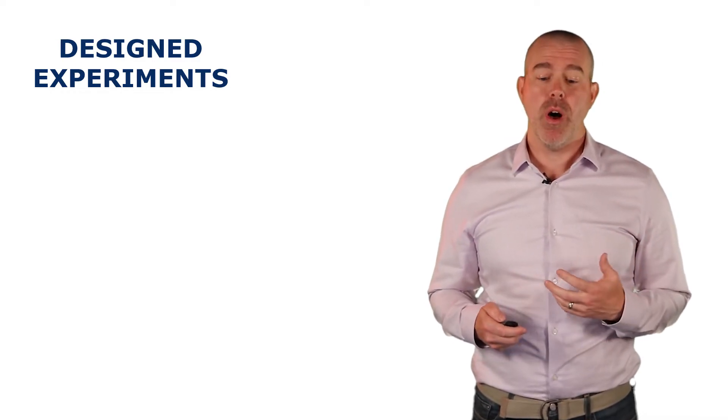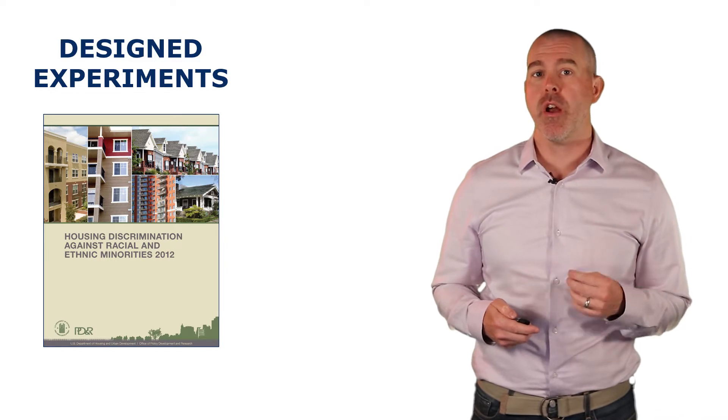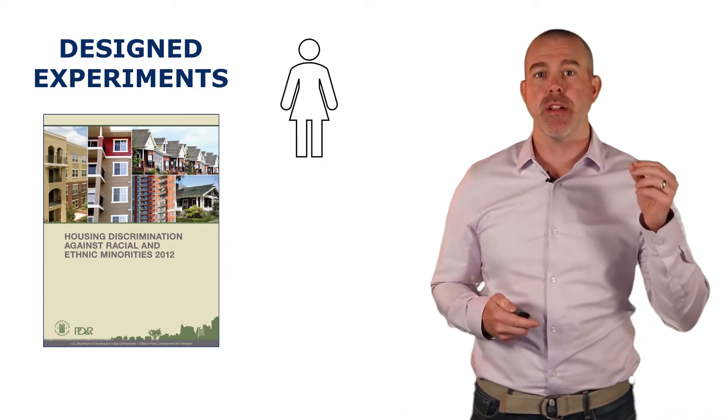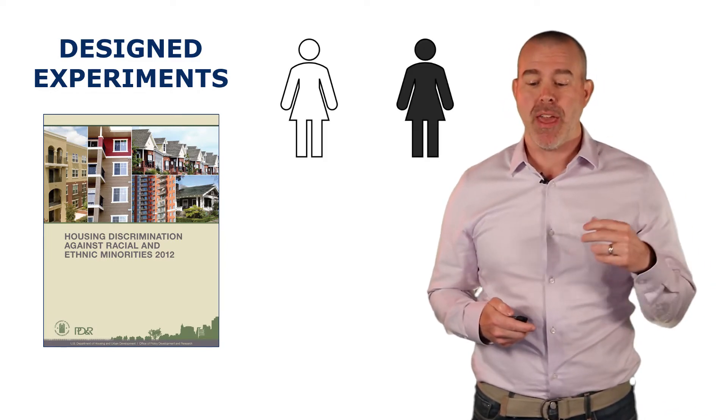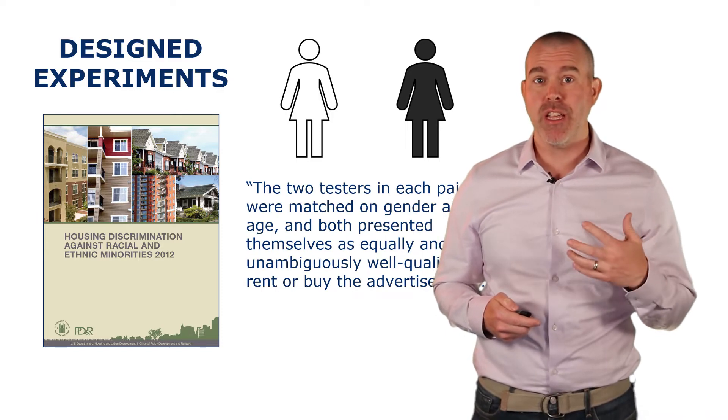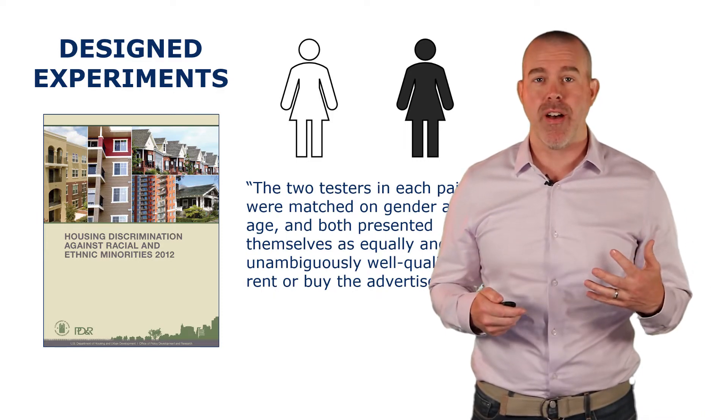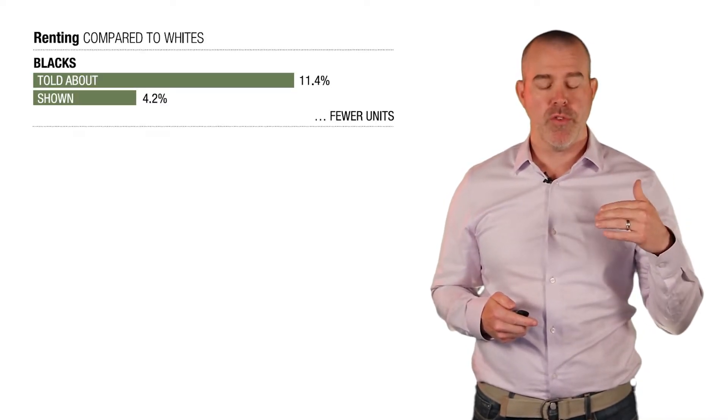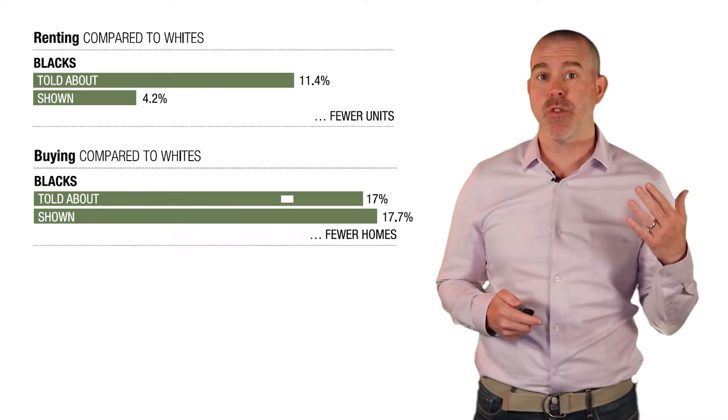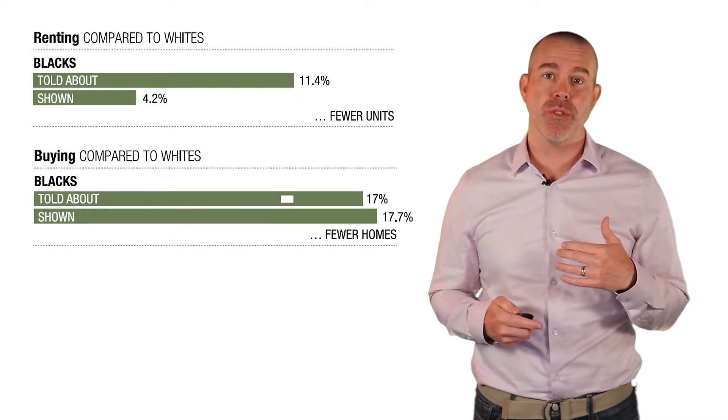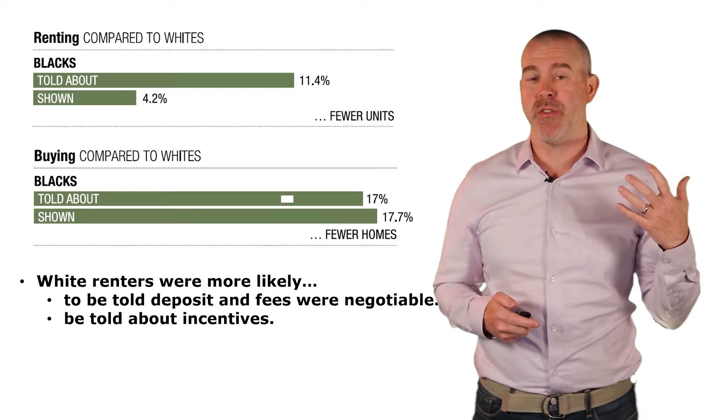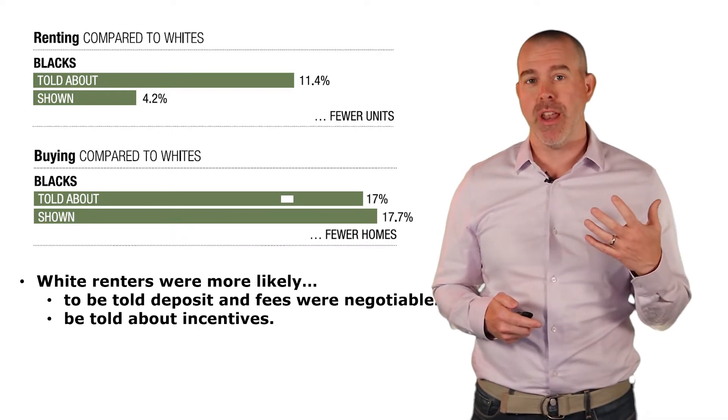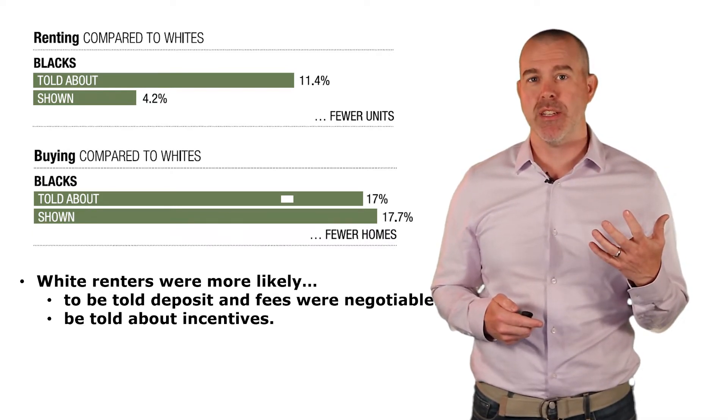We've actually talked about a couple of these already. One of them was in housing discrimination where testers sent out white homebuyers, black homebuyers. They were matched according to gender and age and equally qualified. What they found is that compared to whites, black renters were told about and shown fewer units. Black homebuyers were told about and shown fewer homes. White renters were more likely to be told that the fees were negotiable and also more likely to be told about incentives.